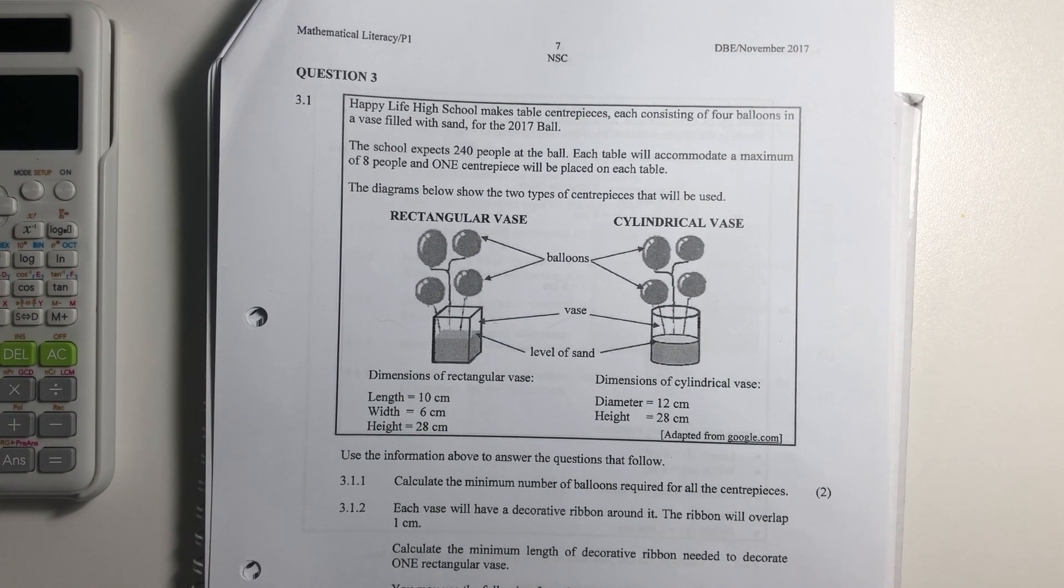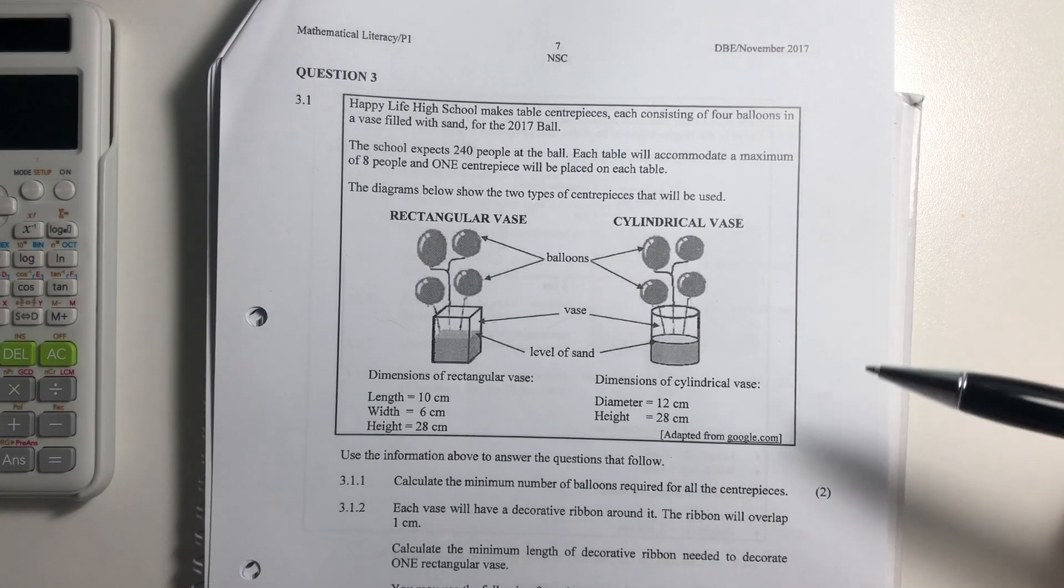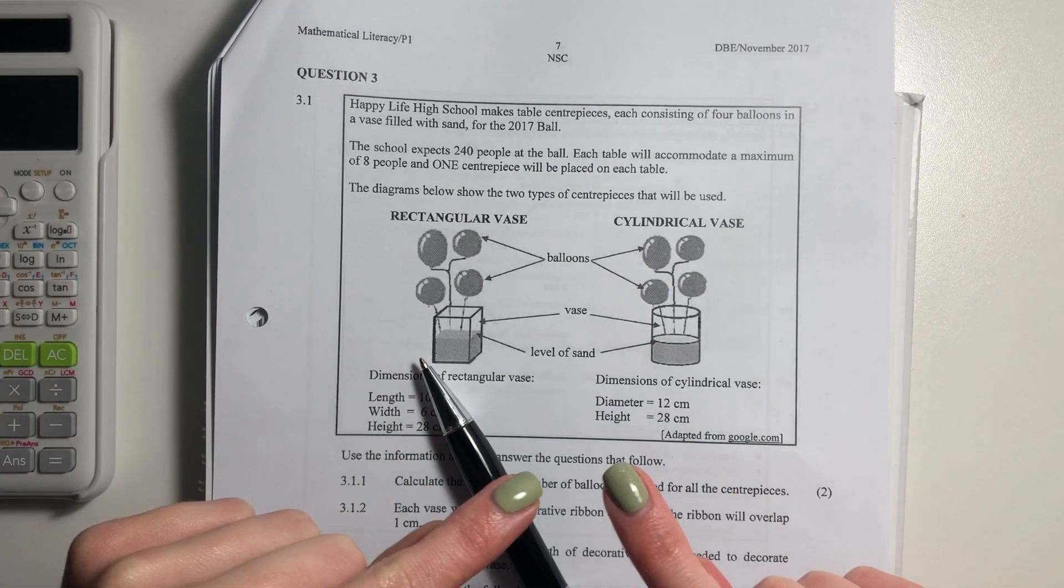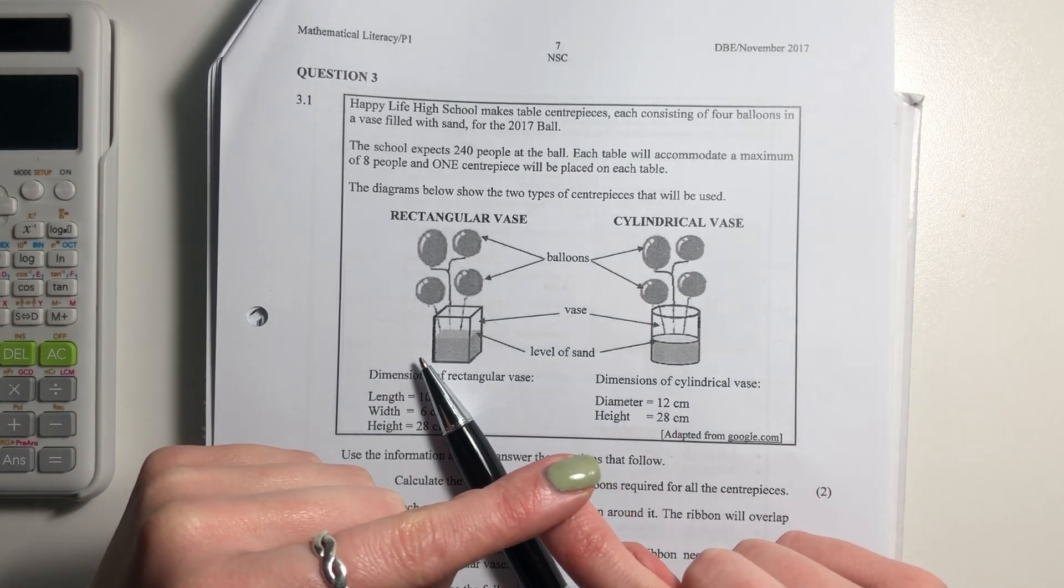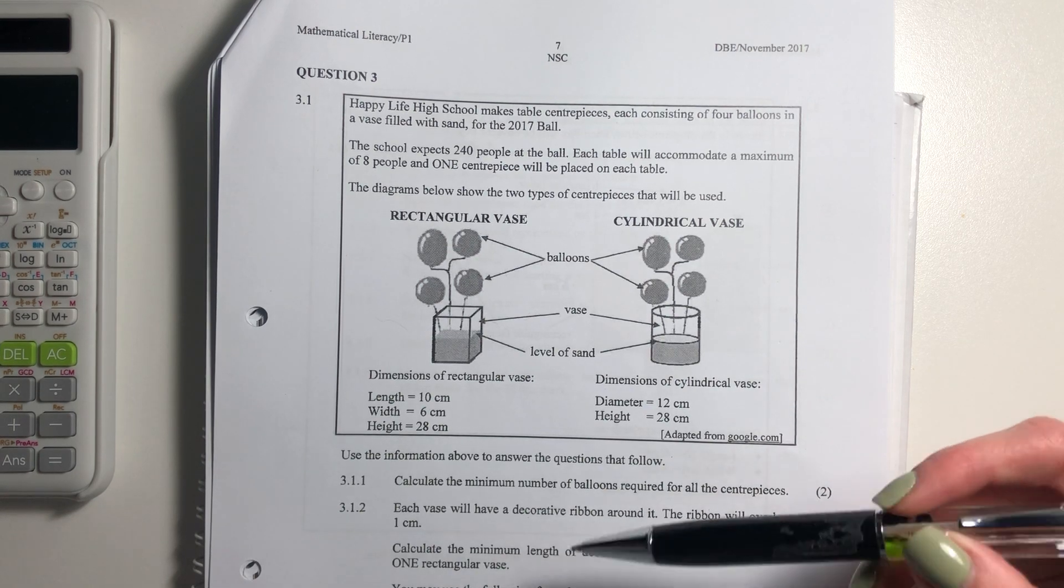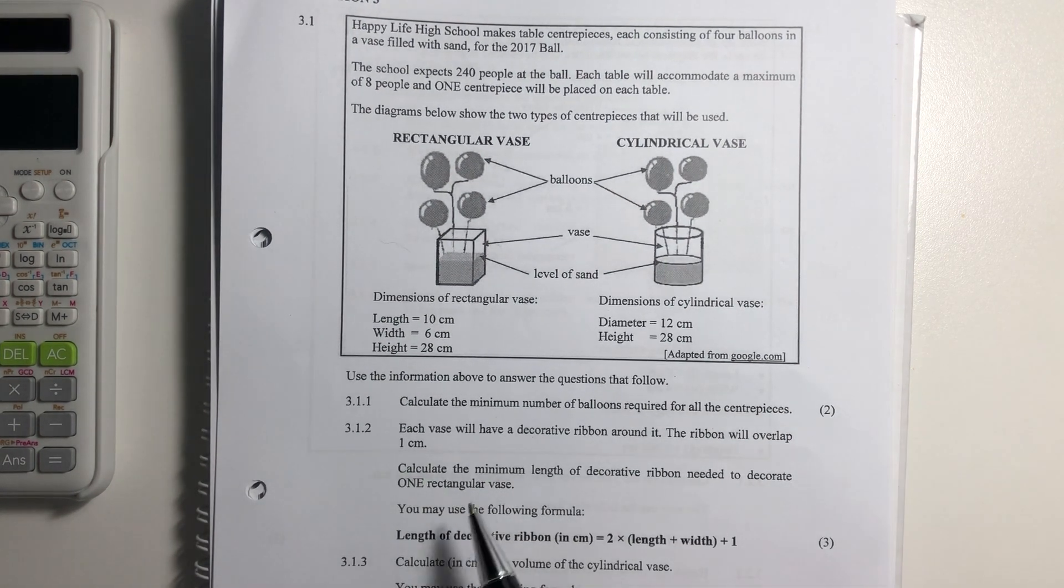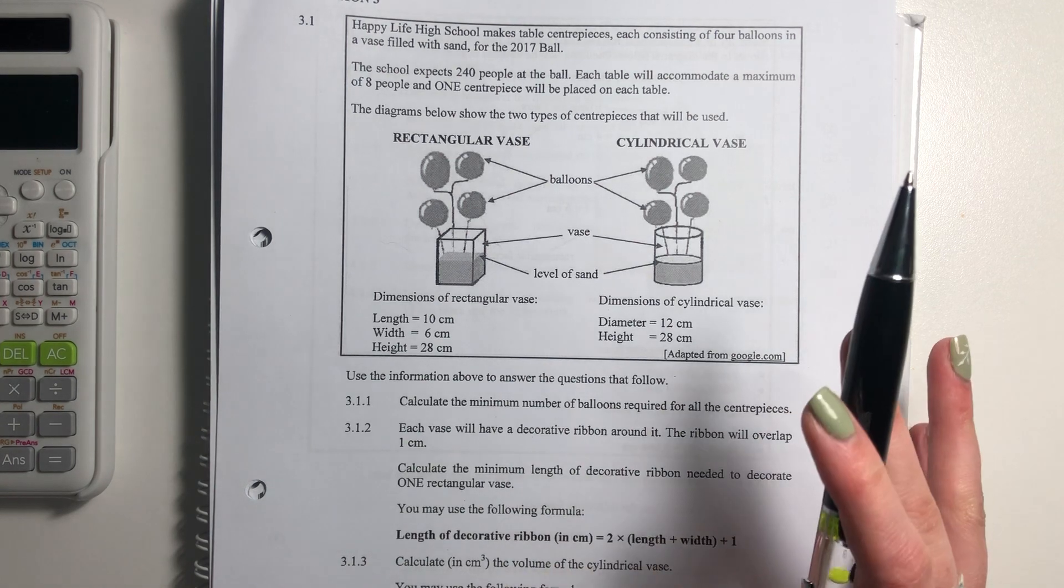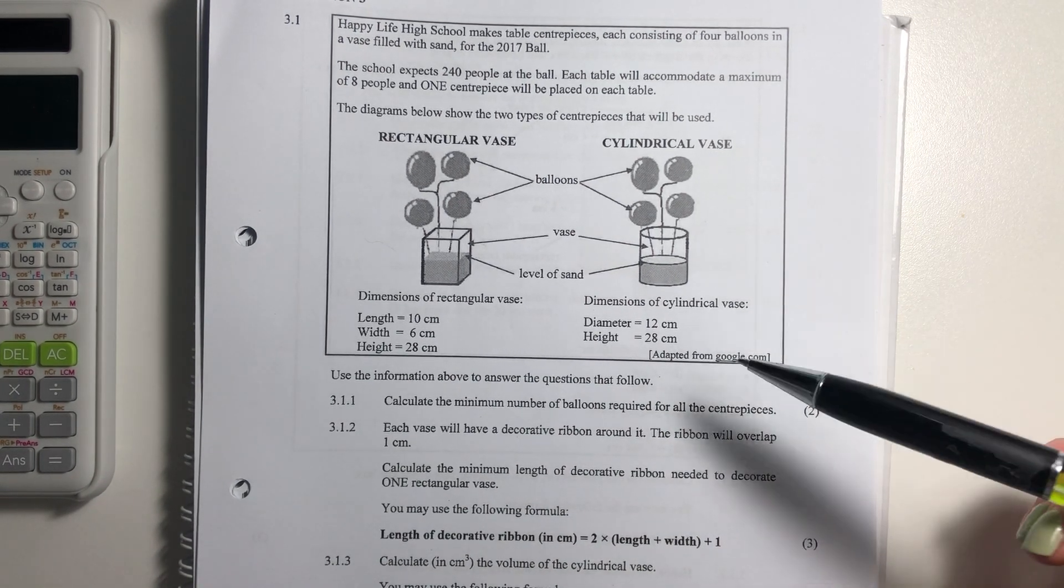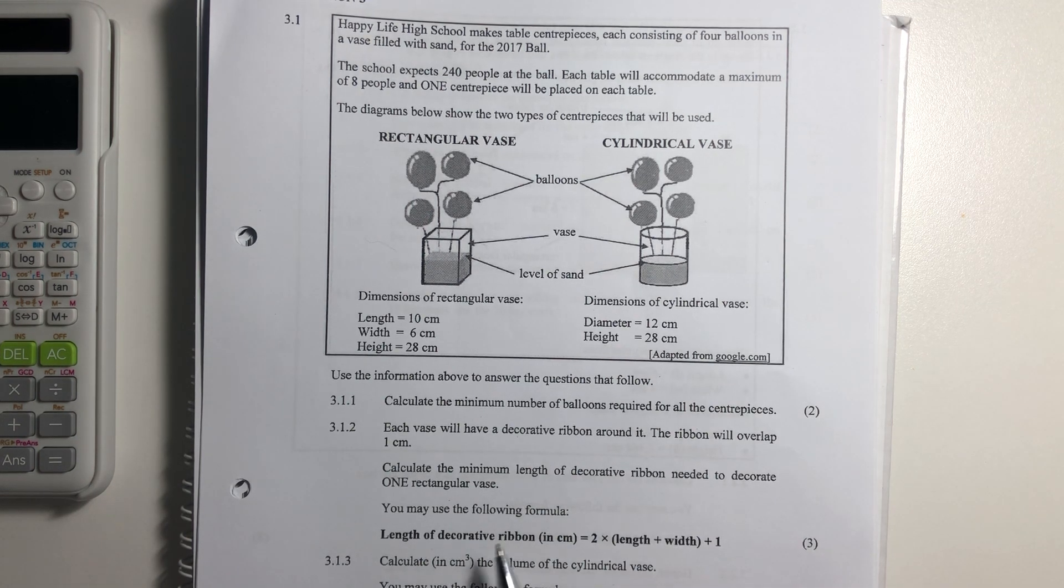It says each vase will have a decorative ribbon around it. The ribbon will overlap one centimeter. So basically means as you wrap it around, that little overlap will be like that. One centimeter. Calculate the minimum length of decorative ribbon needed to decorate one rectangular vase. So thankfully, we don't need to think about the circular vases. Only the rectangular ones right now.